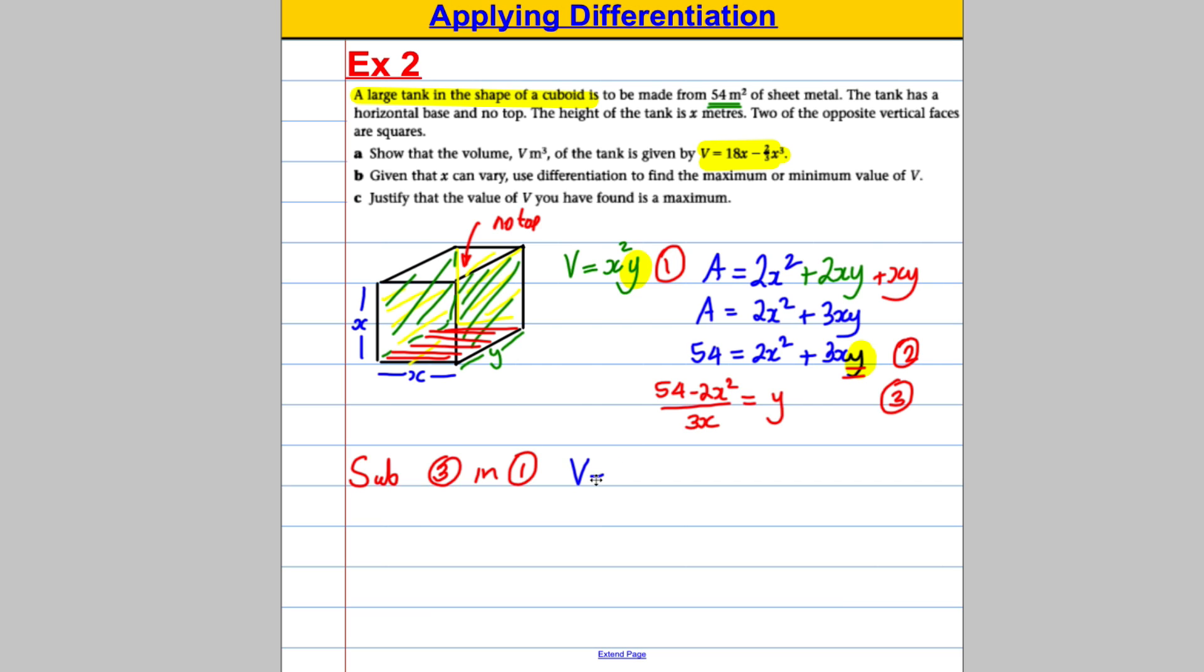So our volume is x squared y. So it's going to be x squared multiplied, not by y, but this thing here. So 54 subtract 2x squared over 3x. Right, there's an x dividing on bottom here and an x times an x on top here. So it could cancel with one of the x's. And then I can multiply in by the x. So I'm going to say that volume is equal to 54x subtract 2x cubed. And don't forget the divide by 3. If we look up here, it wants us to divide each term by 3. 54 divided by 3 is 18. So that's 18x subtract 2/3 x cubed. I've got exactly what I was asked for in the question.